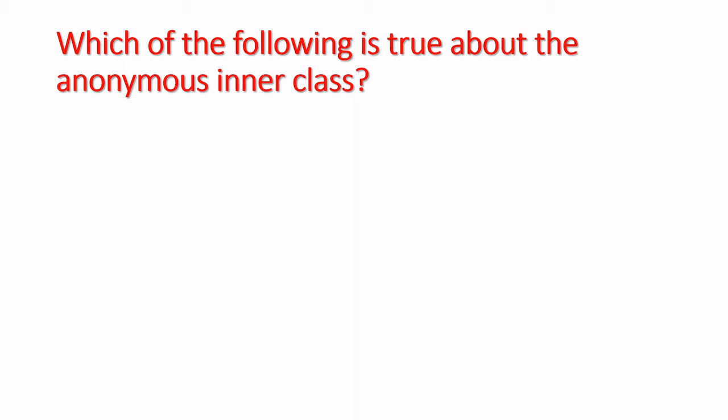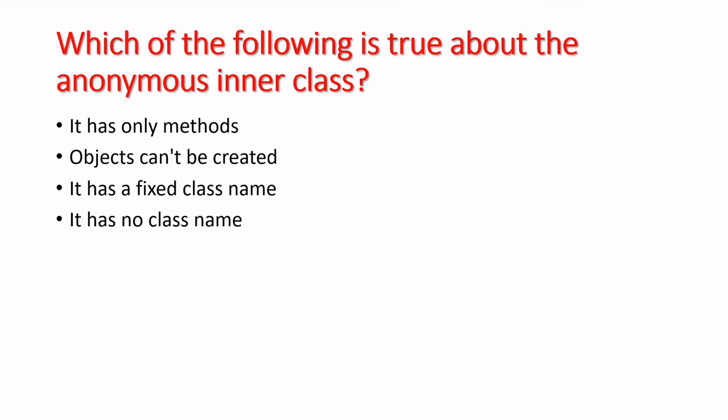We are going to learn about anonymous class. They will give you some sample answers. You have to find out about the anonymous class. So let's say it has only methods, objects can't be created, it has a fixed class name, and it has no class name.